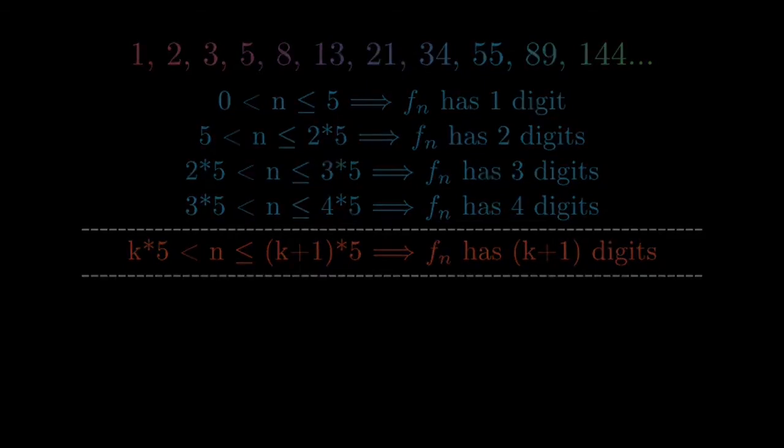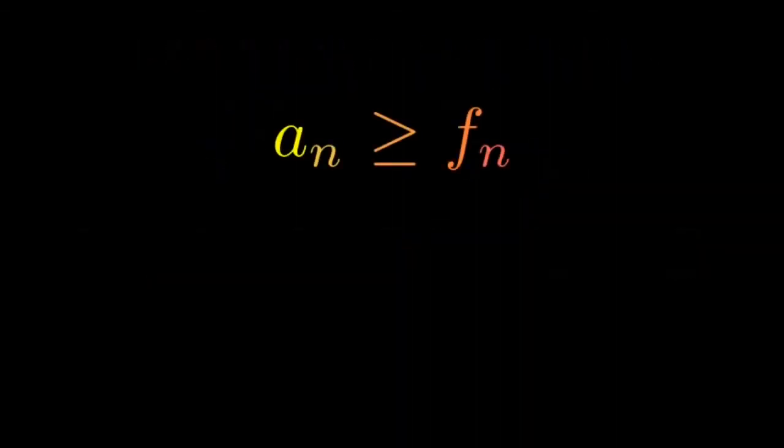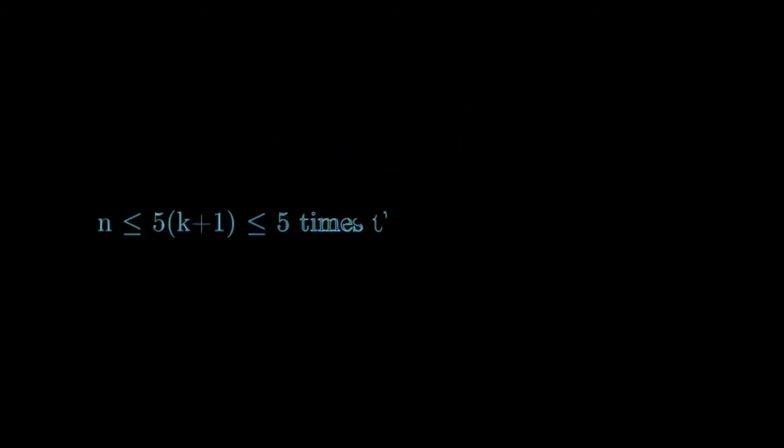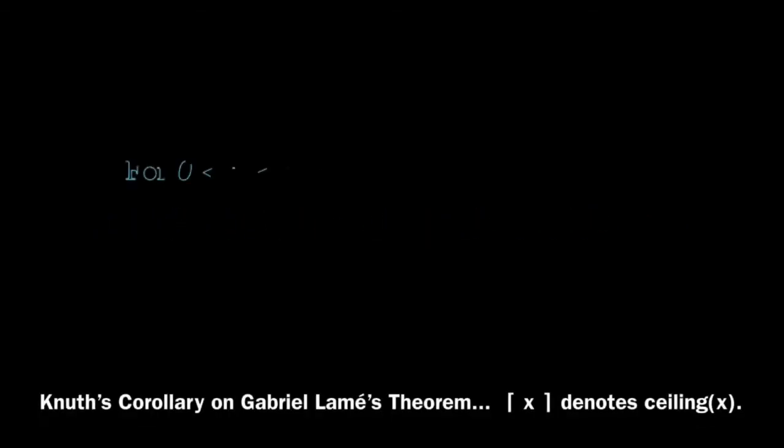Now, if you remember, we had shown that a_n is greater than or equal to f_n a while ago. This proves that for n greater than or equal to 5k and less than or equal to 5 times (k+1), a_n too has at least k plus 1 digits. That is, n is less than or equal to 5 times k plus 1, which in turn is less than or equal to 5 times the number of digits in a_n, or simply, the number of steps in the Euclidean algorithm, i.e. n, is no more than 5 times the number of digits in a_n, the smaller number of the pair whose GCD is being calculated.